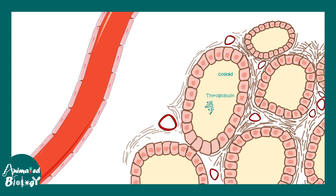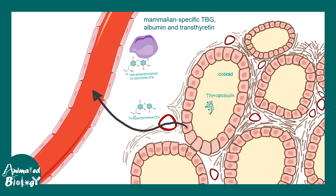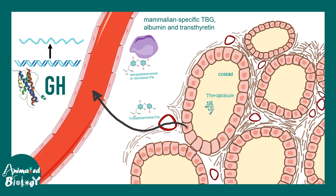Another way growth hormone regulates metabolism is by modulating thyroid hormone availability. In the thyroid follicle, thyroglobulin is secreted into the blood as T3 and T4. Growth hormone increases production of TBG (thyroid binding protein), which acts as a carrier for thyroid hormones and delivers them to specific organs.